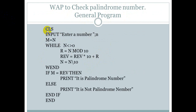CLS, enter a number. N equals to N, while N not equals to zero: R equals to N mod 10, REV equals to REV into 10 plus R, and N equals to N slash 10. This while-when loop is used to reverse the given number, and the result will be stored in the REV variable.